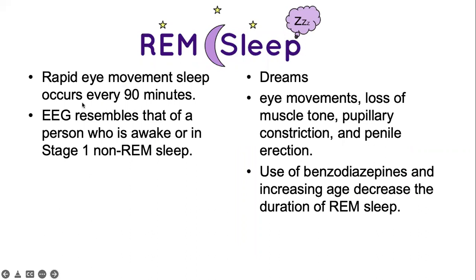REM sleep occurs every 90 minutes, so throughout the whole night you will cycle through stages one to five repeatedly. Benzodiazepines such as midazolam and diazepam, as well as aging, decrease the duration of REM sleep. That's why elderly patients sometimes complain of very light sleep, easily waking in the middle of the night and having difficulty going back to sleep. The quality of sleep is not as good as when you are younger.